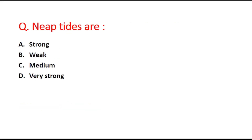Next question: Neap tides are which type? Option A is strong, B is weak, C is medium, and D is very strong. The right answer is option B, weak.